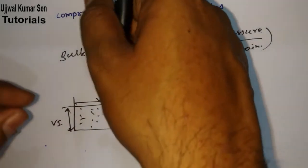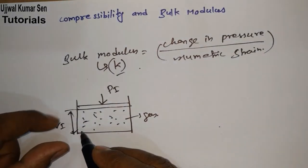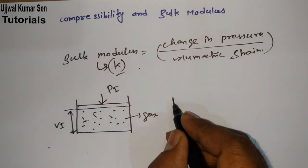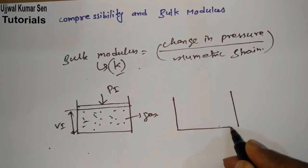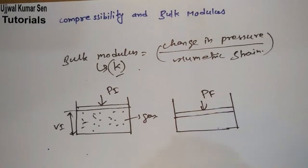But whenever we are increasing pressure, there is change in volume. If I put pressure, it will try to push and the volume will decrease. Now we have to draw that condition as we are increasing pressure. The increasing pressure is Pf.